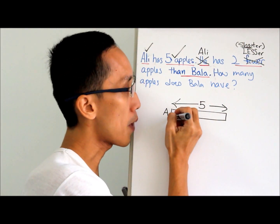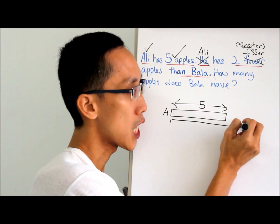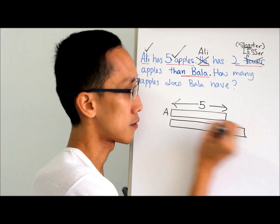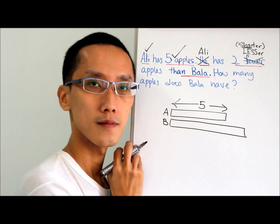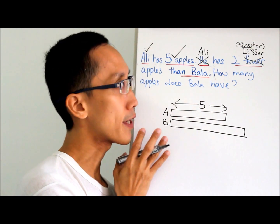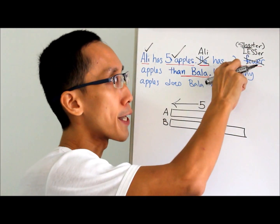So Ali should be shorter and Bala will be longer. Now bring in the number — two.